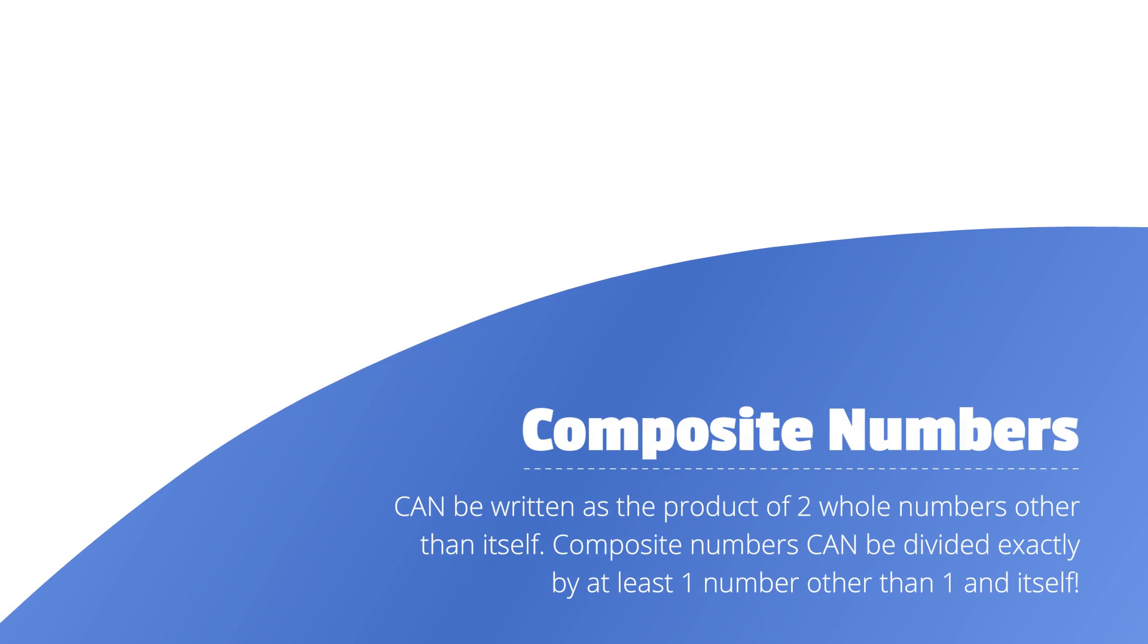Composite numbers can be written as a product of two whole numbers other than itself. Composite numbers can be divided exactly by at least one number other than one and itself.